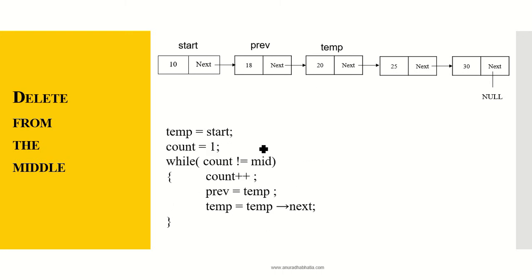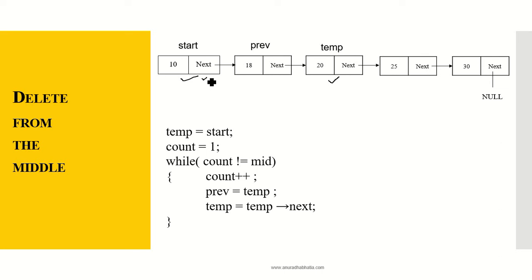With middle found as 3, we reset temp = start and count = 1. We use an additional pointer 'previous'. While count is not equal to mid, we set previous = temp, then temp = temp->next, and count++. In the first iteration: previous points to node 1, temp moves to node 2, count becomes 2. In the second iteration: previous points to node 2, temp moves to node 3, count becomes 3. Now count equals mid (3), so temp points to the node to be deleted.